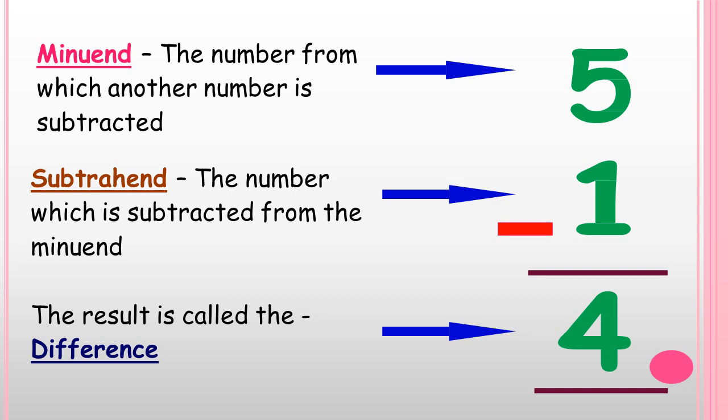In the given example, 5 minus 1 is equal to 4. Here, 5 is the Minuend because it is the number from which another number is subtracted. 1 is the Subtrahend because it is the number subtracted from the Minuend. And so we get the result or Difference as 4. Children, you must note that the Minuend should always be written first, followed by the Subtrahend.